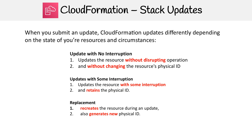The third case is where replacement has to occur. There's no way around it — the only way is to create a new instance or delete the old one and make a new one. A good example is launch configurations: launch configurations cannot be modified, they can only be created and cloned. In this case, you're getting a new resource and that new resource is going to have a new physical ID. Those are the three cases.